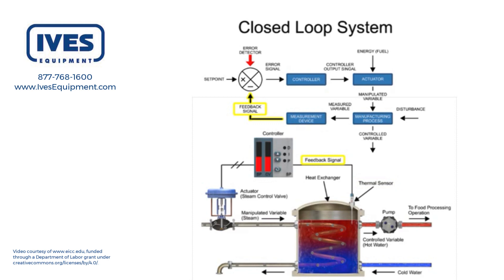The sensor provides an electrical signal to the controller and is defined as the feedback signal in the block diagram. Set point is the predetermined value of the desired condition of the control variable. In the heat exchanger, the set point is the programmed value of the water temperature leaving the tank.